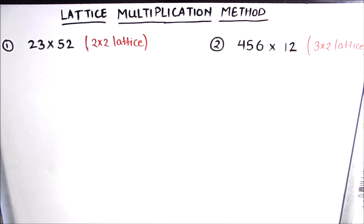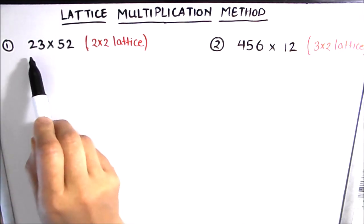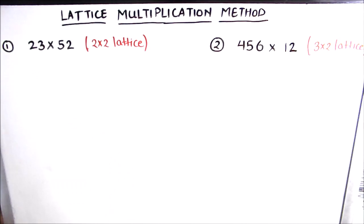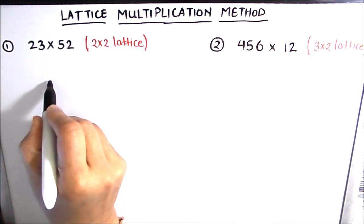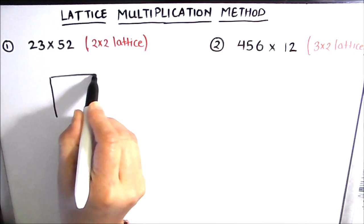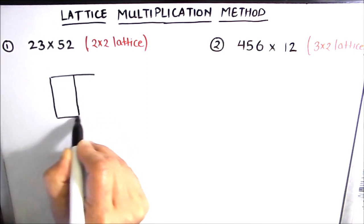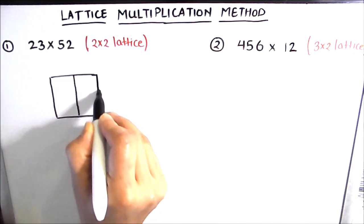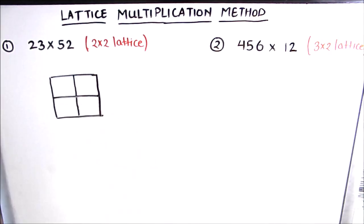Let's start with example one, where we are going to multiply a two-digit number by a two-digit number. So we are going to make a square with two rows and two columns. In order to determine which number goes on the rows and which goes on the columns, it totally depends on the place value of the numbers. The number with the highest place value goes on the columns, and the number with the lowest place value goes on the rows.